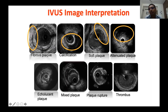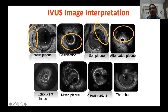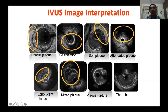The plaques we commonly see are mixed ones where none of the components make up more than 85 percent of the plaque material. You see a mix of calcium, soft elements, and fibrous elements — a typical example of a mixed plaque.